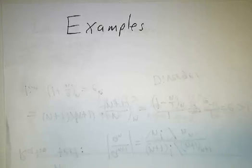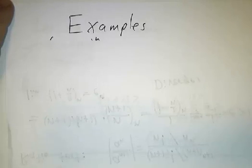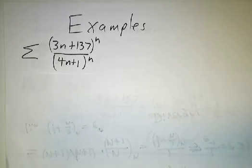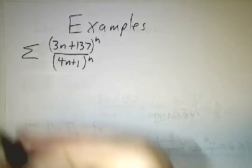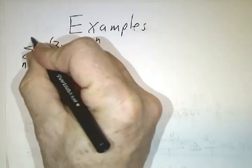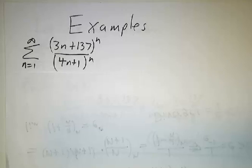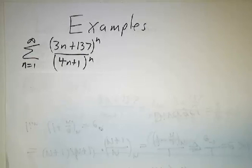Let's look at some examples where we can use the root test and the ratio test. In our first example, we want the sum as n goes from 1 to infinity of (3n + 137)^n divided by (4n + 1)^n. Now this looks awful, but it really isn't so bad for the root test.